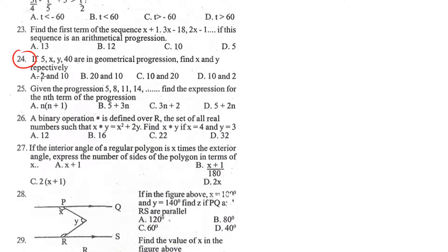Here in question number 24, we are told that if 5, x, y, and 40 are in geometric progression, we are to find x and y respectfully. This is GP.